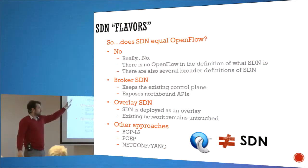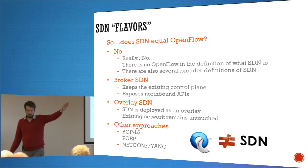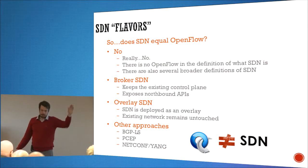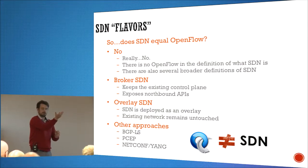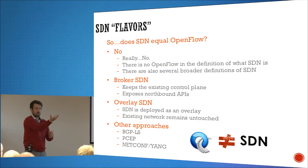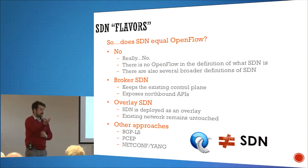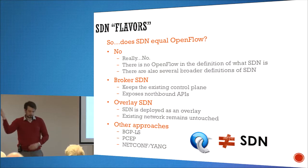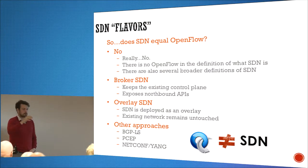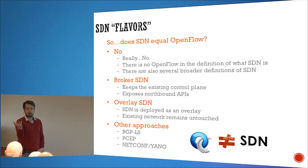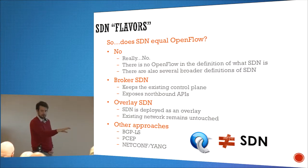One of the definitions is 'broker SDN.' It means keep networks as they are, keep the existing control plane, but expose APIs to the software developers — which is what we are lacking today. How much network equipment do you own that actually has a programmable API? Usually it has a CLI, and that's about it.